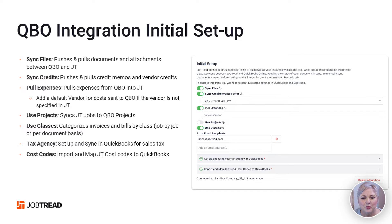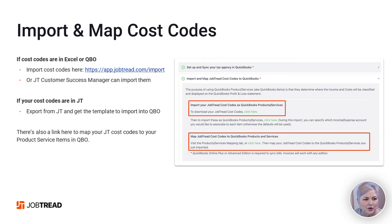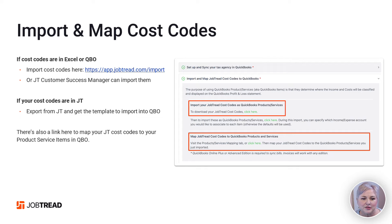Finally, we have the option to import and map your JobTread cost codes to QuickBooks. You can import your cost codes into JobTread if you have them in Excel by using the link app.jobtread.com/import, or you can have your JobTread customer service manager import them for you. Once your cost codes are in JobTread, you can use the 'click here' link to export your JobTread cost codes and get the template to import them into QuickBooks Online. There's also a link to map your JobTread cost codes to your product or service items in QuickBooks Online.